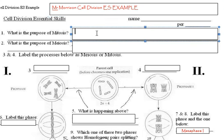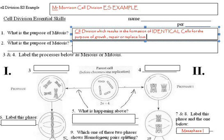So first of all, starting off with the purpose of mitosis. Mitosis is cell division and it results in formation of identical body cells for the purpose of growth to make your body larger from when you're a baby, and also to repair or replace lost cells when you get injured.